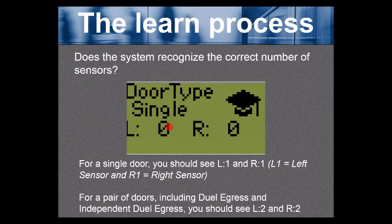In this screenshot, zero, the micro scan hub does not recognize any sensors at all. If this was a single door, you should see L1 and R1 for a left sensor and a right sensor. If it was a pair or dual egress, you would see L2 and R2.